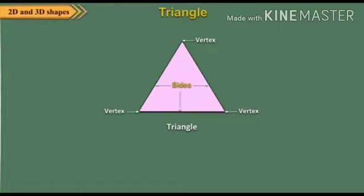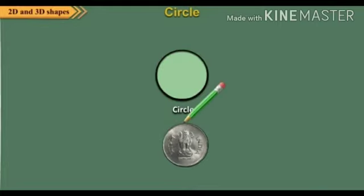Now the next shape is a circle. A circle has no vertex and no sides. It is a closed loop. You can use a coin to make the shape of a circle.